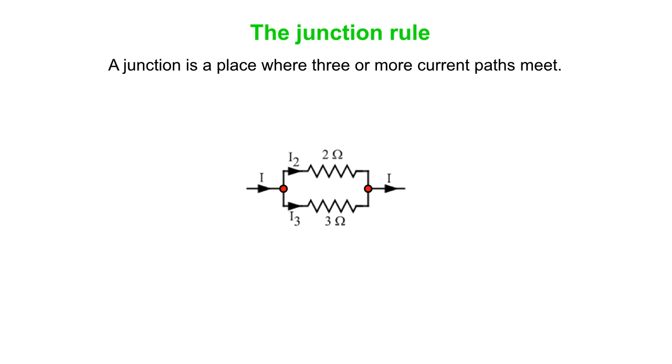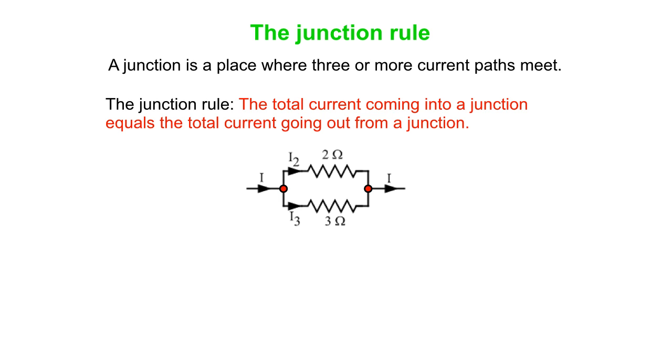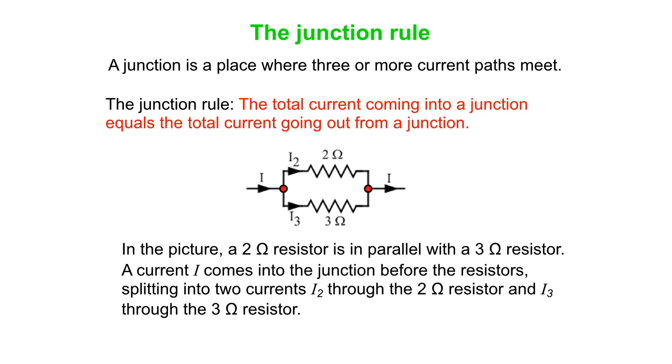And so we have two junctions in this particular picture here marked in red. You can see current I comes into that junction on the left and splits up into I2 and I3. Or, if you look at the picture on the right, current I2 and I3 flow into that junction and I goes away. So the Junction Rule simply says the total current coming into a junction equals the total current going out from a junction. That really makes a lot of sense. If you have two amps coming in, you've got to account for that two amps someplace.